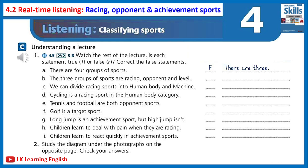There are three groups of sports. The first group consists of racing sports — racing means trying to go faster than another person. The second group is opponent sports — an opponent is someone you play against. Finally, there are achievement sports — achievement means reaching a certain level, a good level. So sports can be classified into these three groups.